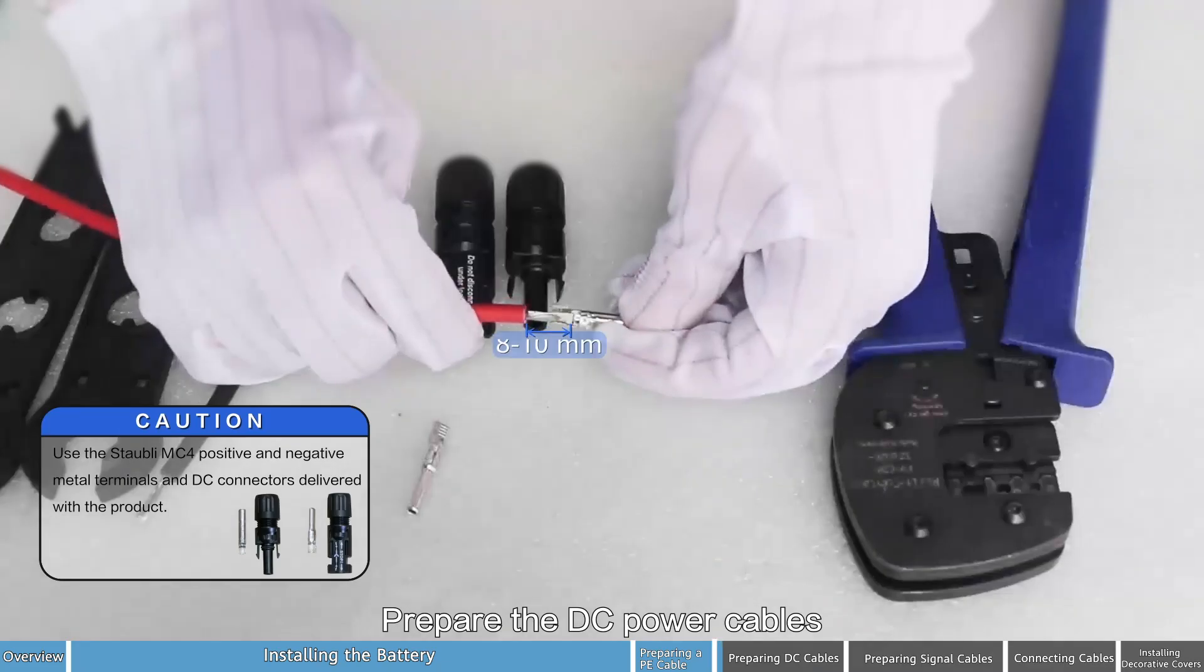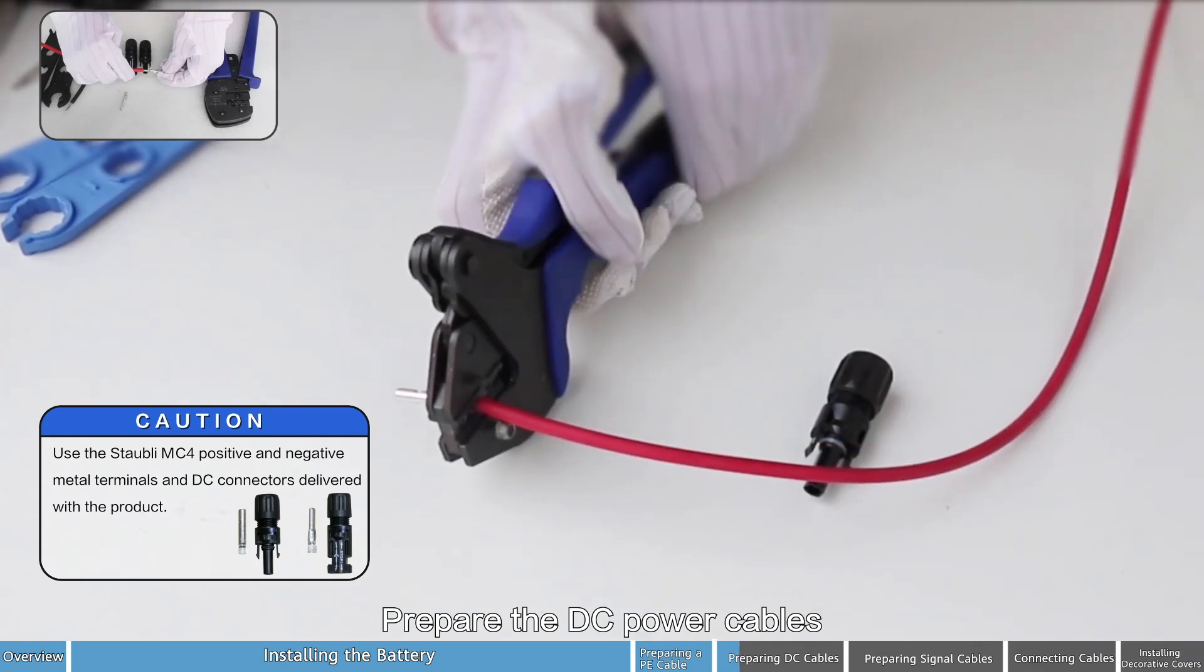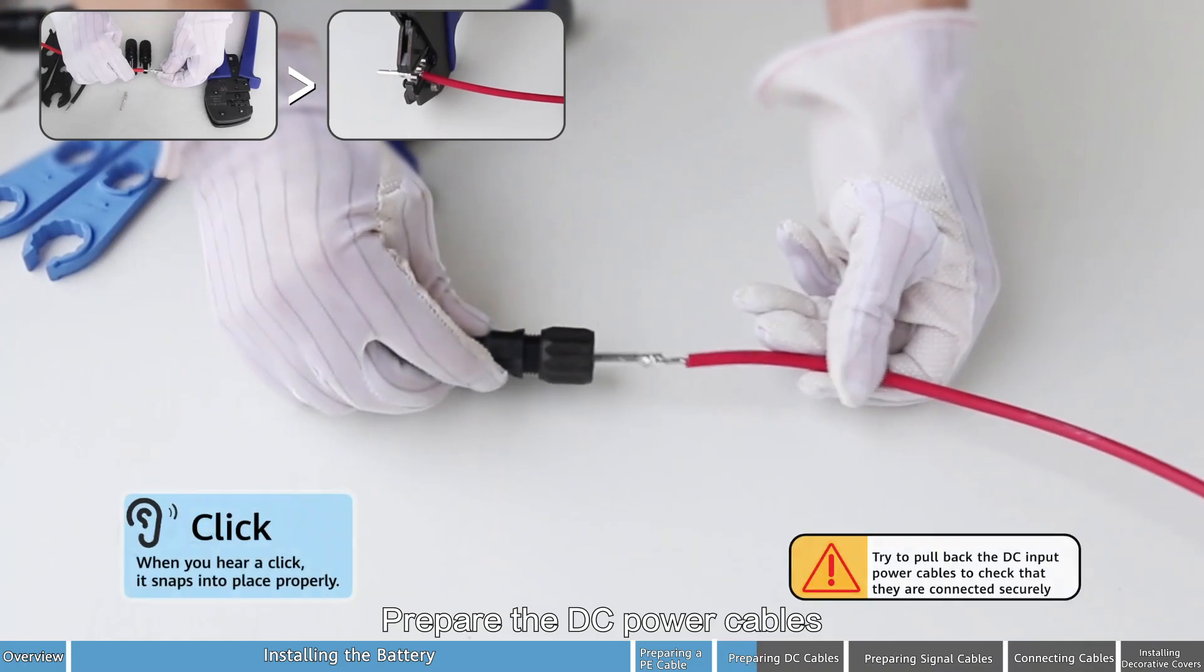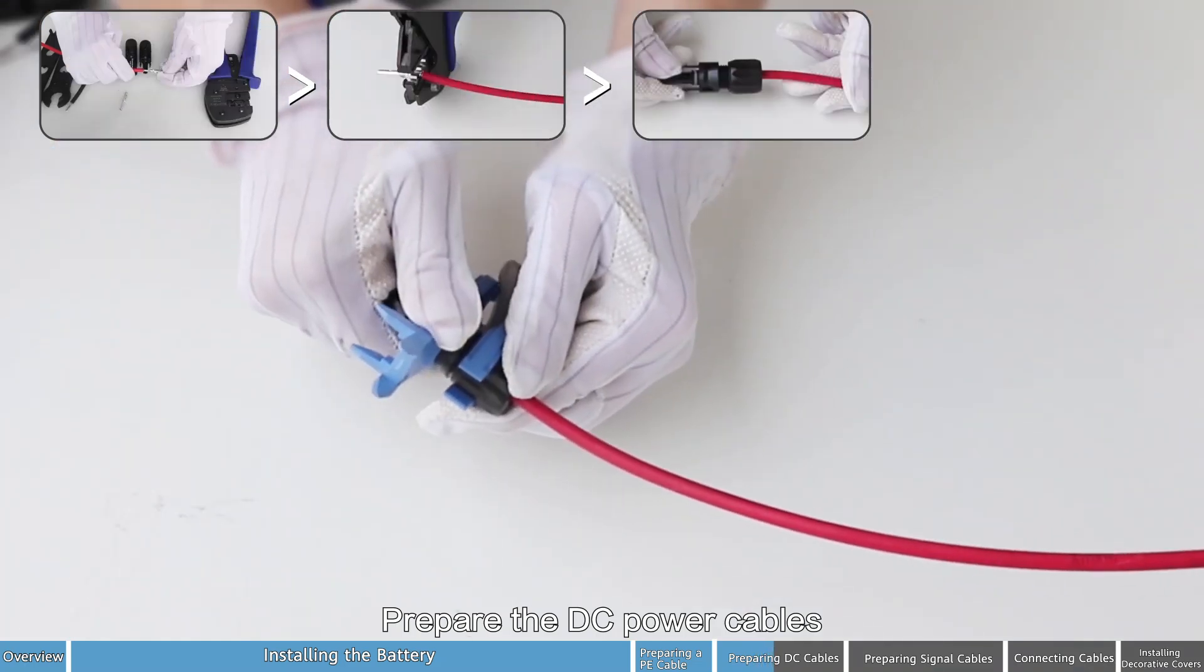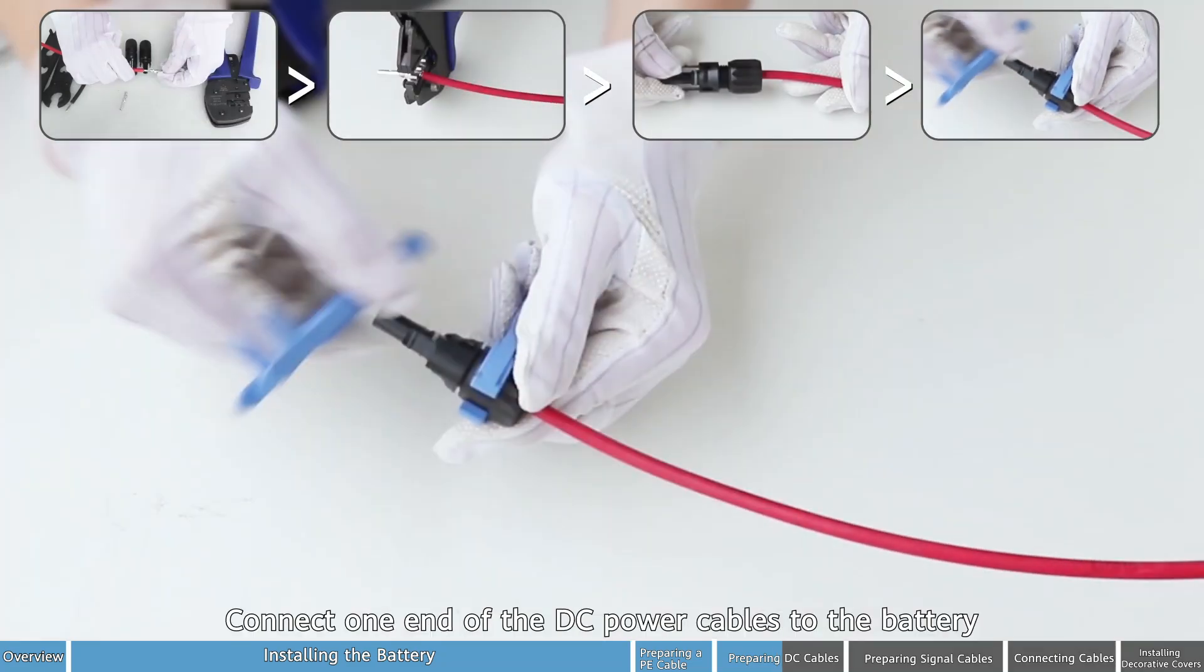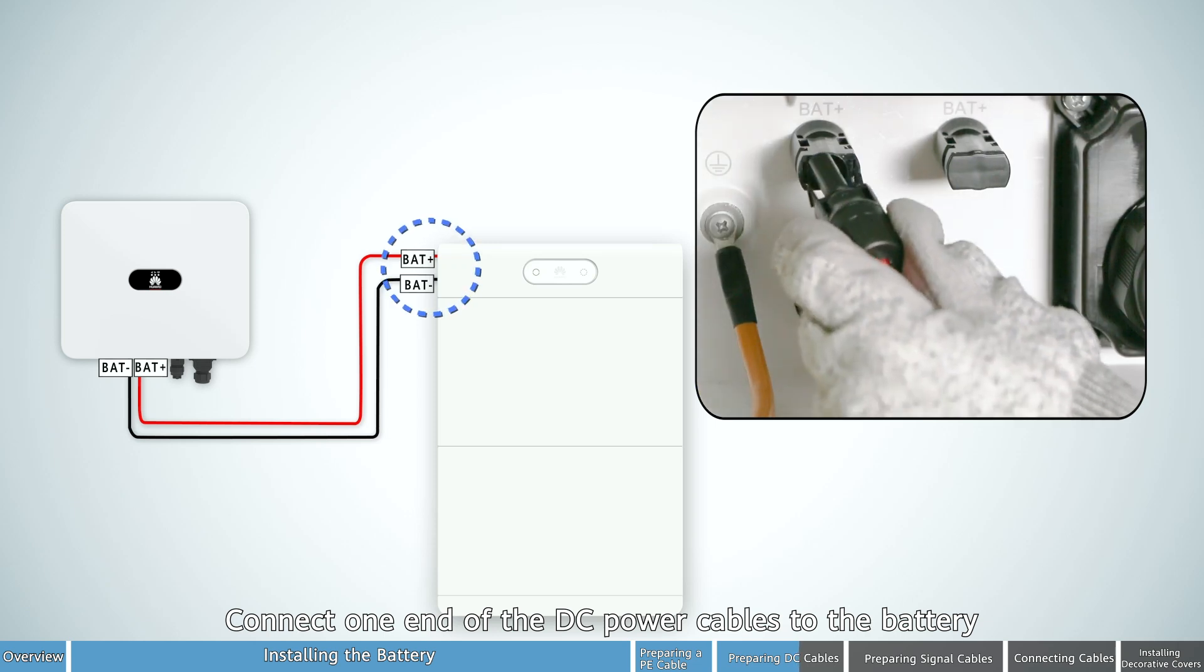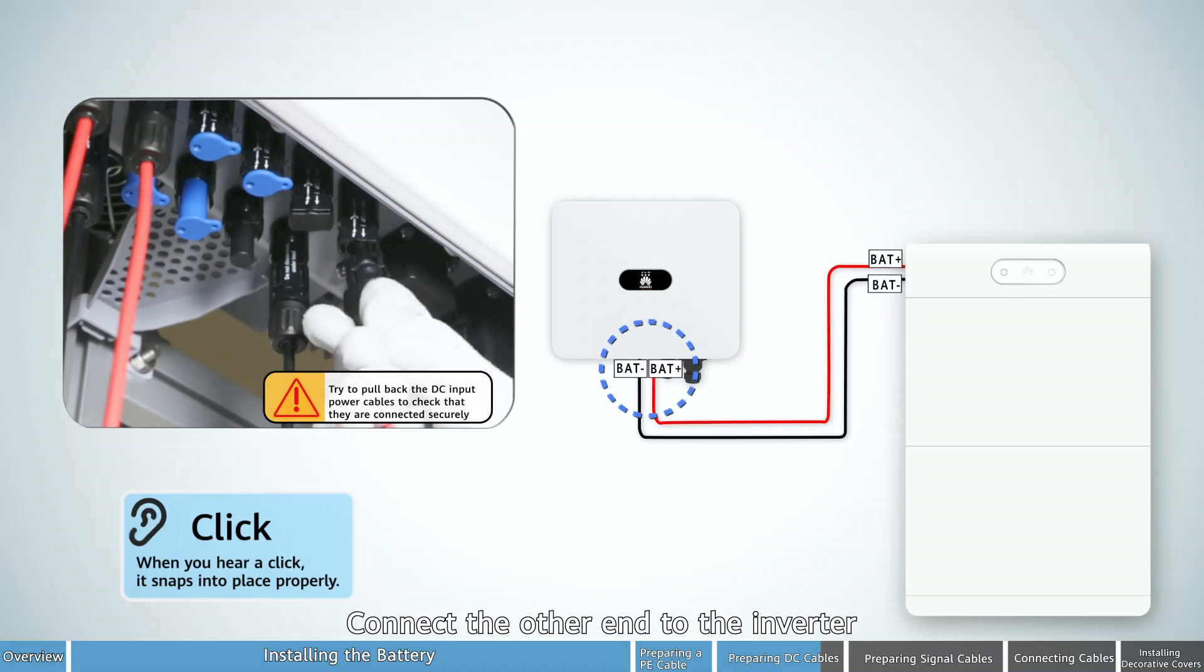Prepare the DC power cables. Connect one end of the DC power cables to the battery. Connect the other end to the inverter.